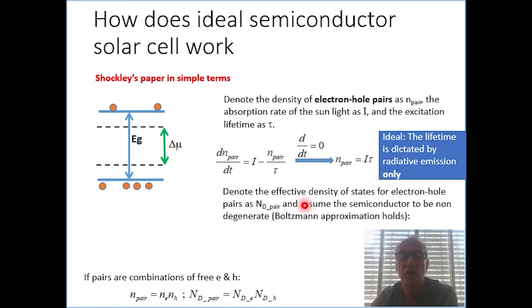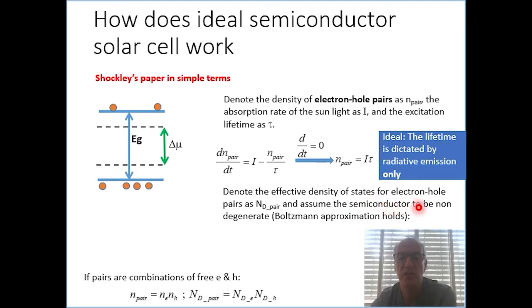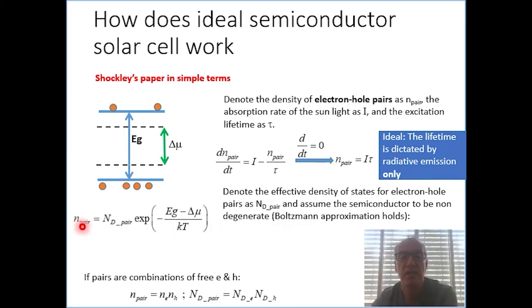The next thing we would usually do is assume that we know the density of states of the system — first we think of the density of states of electron-hole pairs, and if you are in a molecular system, you would think of the density of states for the excitons. And we think that the semiconductor is non-degenerate so we can use the Boltzmann approximation.